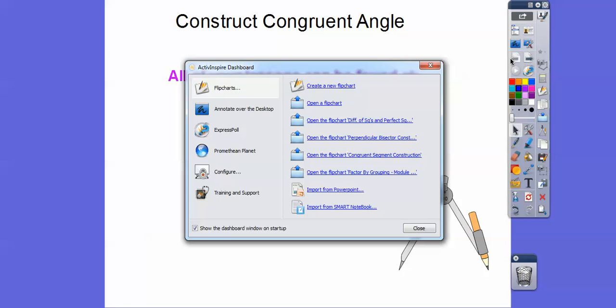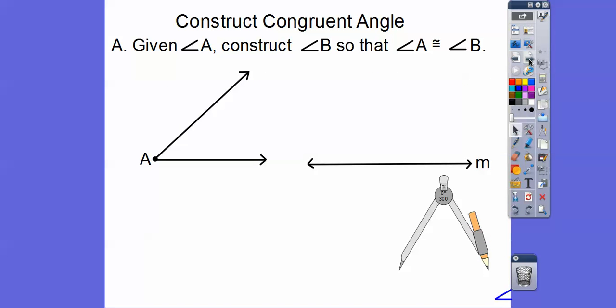Alright, so let's get started here. So here we're given angle A and we're going to construct angle B so that angle A is congruent to angle B. So here's the steps.